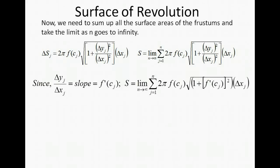Now we have the limit as n goes to infinity and the sum of j equals 1 to n of 2π times f(c) times the square root of 1 plus [f'(c)]² times Δx.